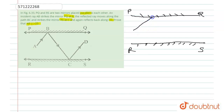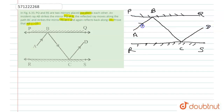This is the incident ray, this is the reflected one, and this is again the reflected one. So this is A, this is B, this is C, and this is D. Now let's draw two perpendicular lines — perpendicular line BM and perpendicular line CL.